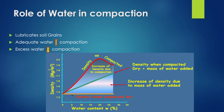The specific gravity of soil grains is approximately 2.65 grams per cubic centimeter. To increase the density of the soil, the water content is very important.